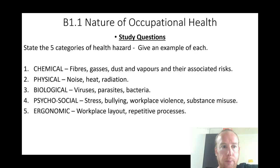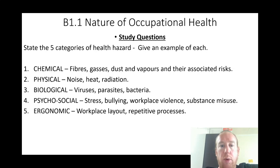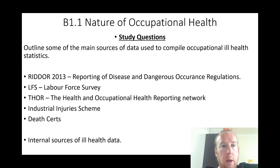Unit one: state the five categories of health hazard and give an example of each. Chemical, physical, biological, psychosocial, ergonomic. Examples: chemicals include fibers, glass, gases, dust, vapors; physical includes noise, heat, radiation; biological includes viruses, parasites, bacteria, and fungi; psychosocial includes stress, bullying, workplace violence, substance misuse; ergonomic includes workplace layout and repetitive processes.